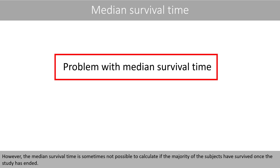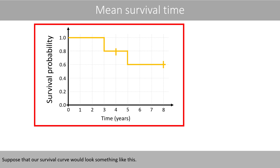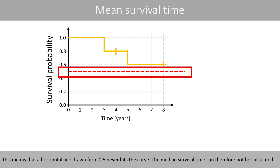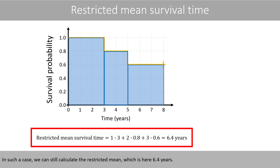However, the median survival time is sometimes not possible to calculate if the majority of the subjects have survived once the study has ended. Suppose that our survival curve would look something like this — in this case, the curve does not go below 0.5, because more than half of the subjects survived longer than 8 years, meaning they survived after the study ended. A horizontal line drawn from 0.5 never hits the curve, so the median survival time cannot be calculated. In such a case, we can still calculate the restricted mean, which is here 6.4 years.